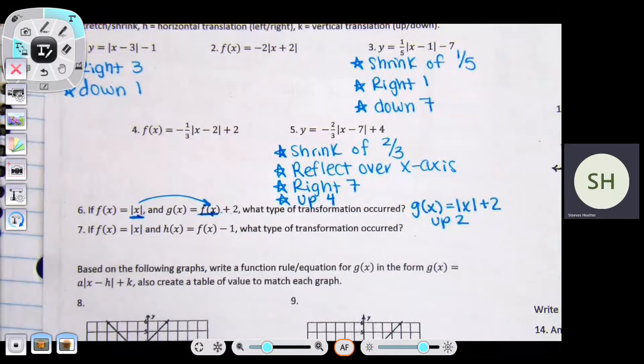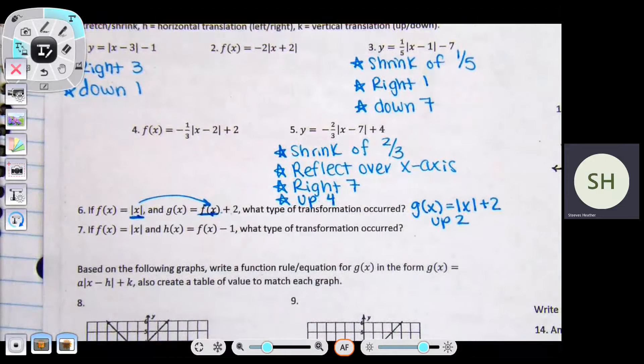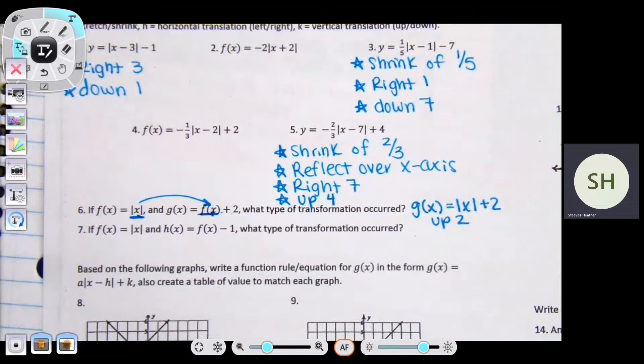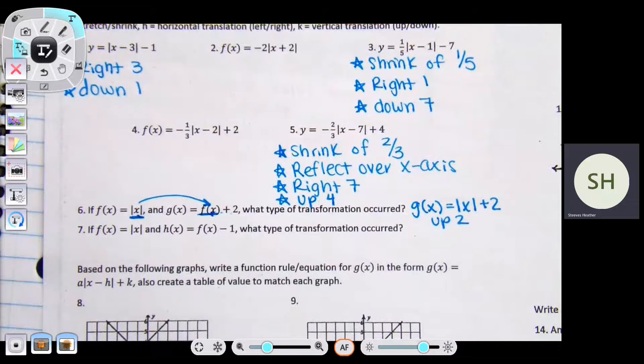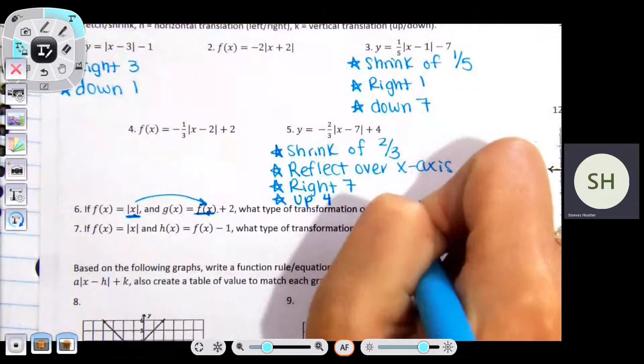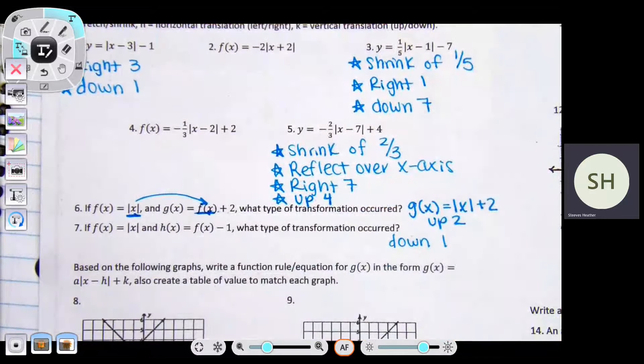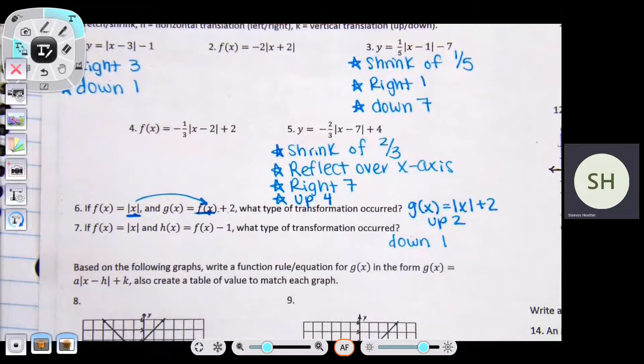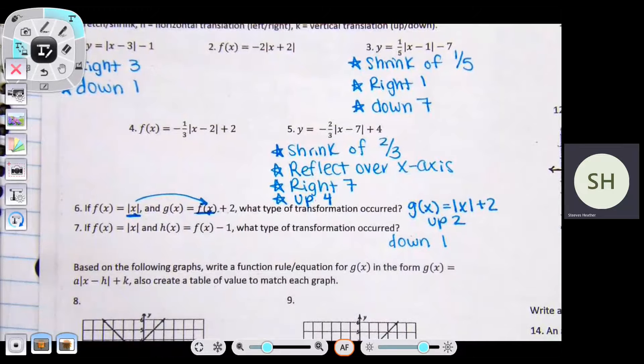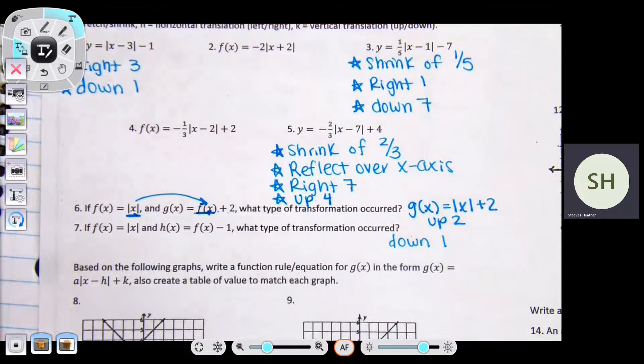F of x and G of x are the same exact thing. They're just saying they're two different equations. So try number seven. Is it down one? Yes. It's down one because the minus one is on the outside of the parentheses, that means it's just being shifted down one. If it was inside the parentheses, that would represent left or right.